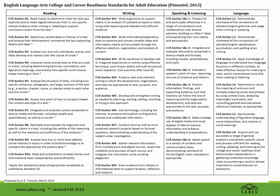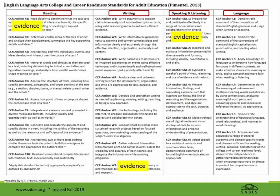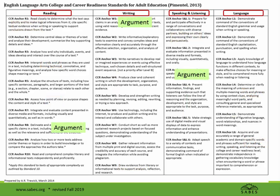Here is a wonderful chart of all ELA anchor standards available on the SABES ELA website. As you can see, there are four domains in English Language Arts: reading, writing, speaking and listening, and language. Although the standards are numbered, these numbers do not represent an order in which they should be taught or a hierarchy of importance.